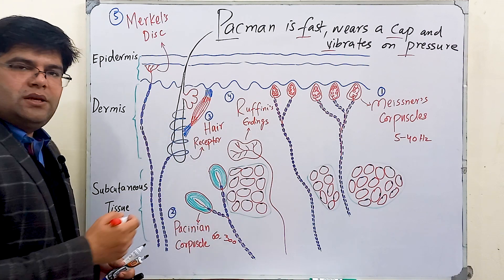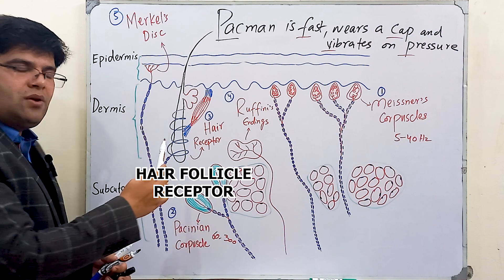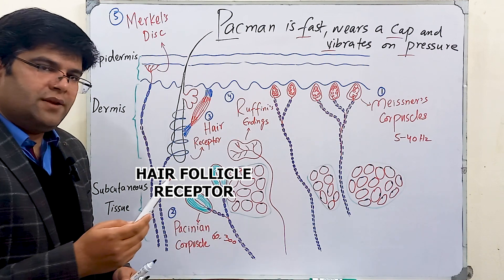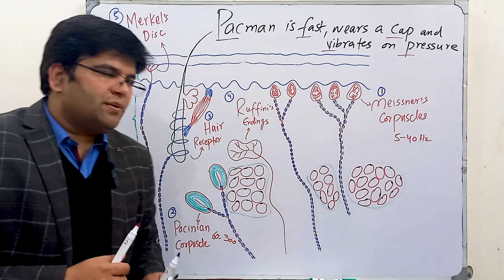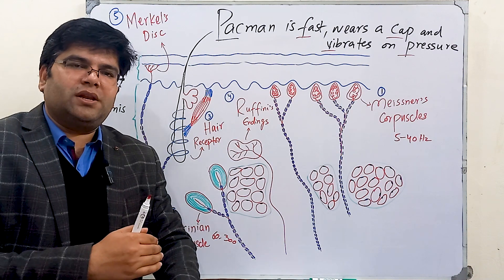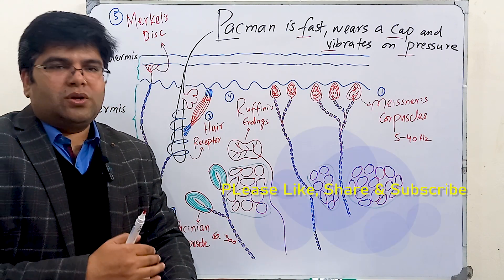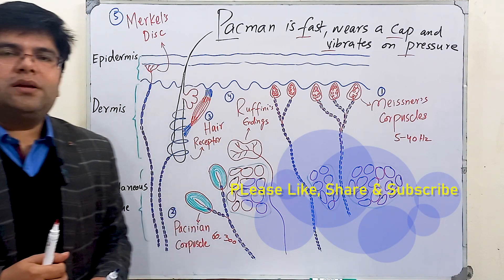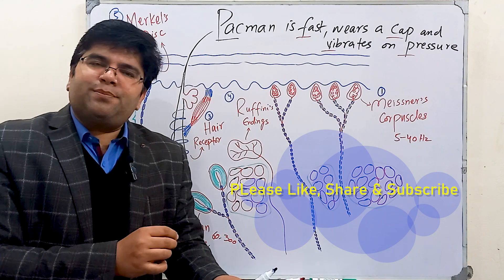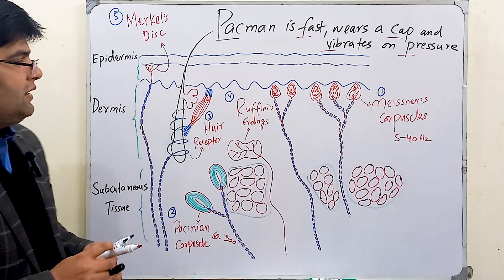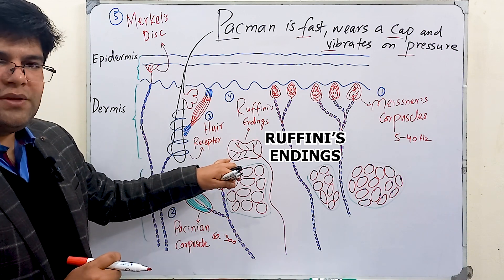The next receptor is the hair end organ, or hair follicle receptor. This receptor consists of nerve endings present around the hair follicle in hairy skin. The hair follicle receptor is a rapidly adapting receptor, just like Meissner's corpuscle and Pacinian corpuscle. It detects velocity and motion across the skin — for example, if an insect is crawling across the skin, these receptors detect the direction and velocity of movement. These receptors also detect light touch, such as stroking the skin with a wisp of cotton.